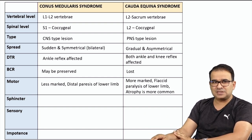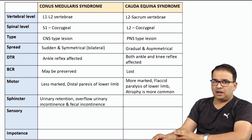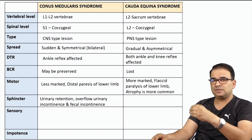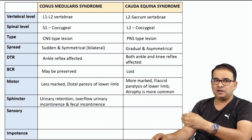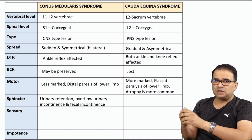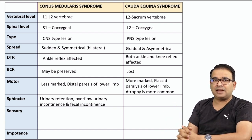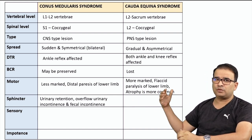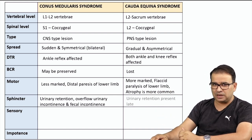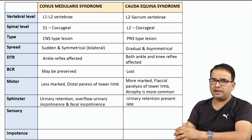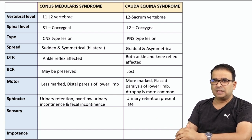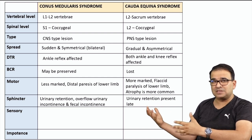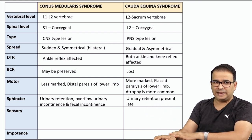For sphincter function: because of S2, S3, S4 involvement — affecting the splanchnic nerves and the pudendal nerve — urinary retention, overflow urinary incontinence, and fecal incontinence will be seen in conus medullaris syndrome. These can also be seen in cauda equina syndrome, but the presentation may come a little later in the course of the injury.